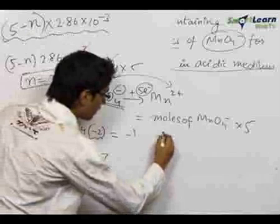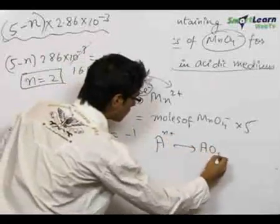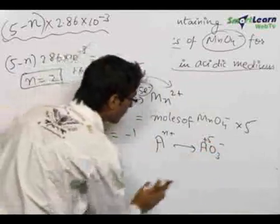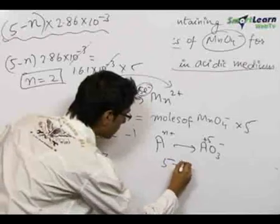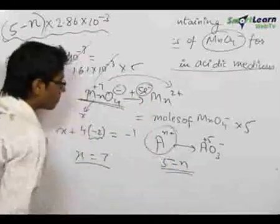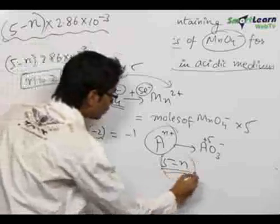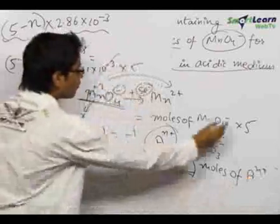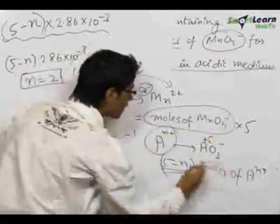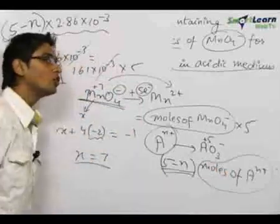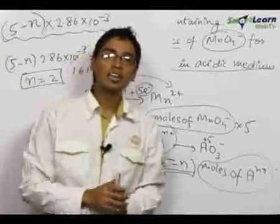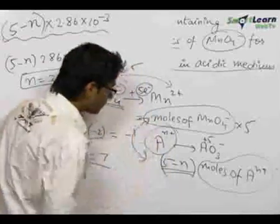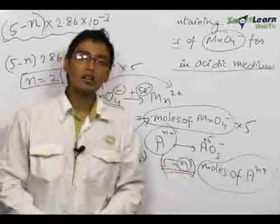Similarly, Aⁿ⁺ was getting oxidized to A⁺⁵, so the number of electrons getting transferred was 5 − N. Hence, the number of equivalents of Aⁿ⁺ was (5 − N) × moles of Aⁿ⁺. In the question, we are provided with moles of MnO₄⁻ and moles of Aⁿ⁺, and we know that during any redox reaction, the number of equivalents of the oxidizing agent equals the number of equivalents of the reducing agent. Hence, on equating these two, we get the final value of N as 2, which is our final answer.